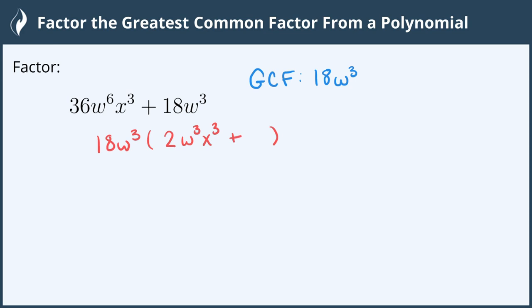Now 18 divided by 18 is 1, and w cubed divided by w cubed is also 1, and since 1 times 1 is 1, we're all done right there.